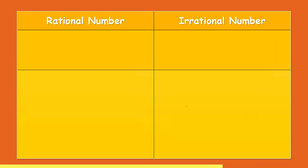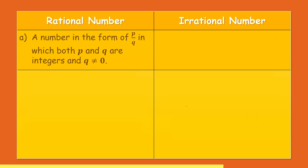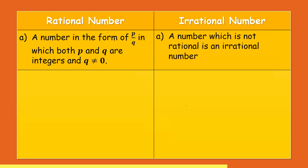A number in the form of P by Q, where P and Q are both integers and Q is not equal to zero, is called a rational number. If a number cannot be expressed in this form, it is not a rational number.